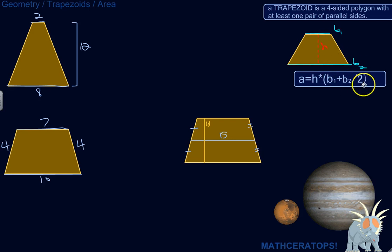So base 1 plus base 2 divided by 2. If you want to average two numbers, you add them up and divide by the number of numbers, which would be 2. So you can think of the area of a trapezoid as just base times height, but since there's two different bases with two different lengths, you have to average the bases first before you do base times height.